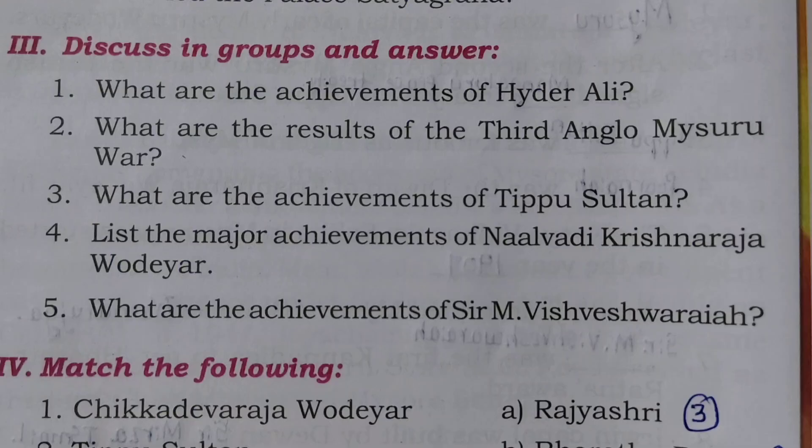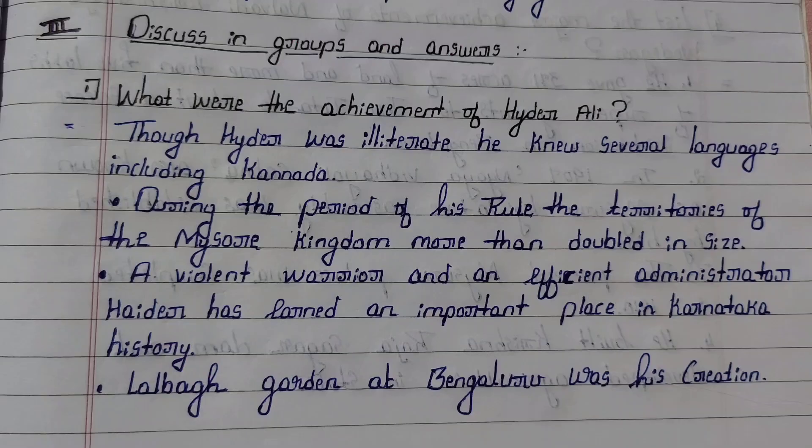Third section: Discuss in groups and answer. First question: What are the achievements of Hyder Ali? Answer: Though Hyder was illiterate, he knew several languages including Kannada. During the period of his rule, the territories of the Mysore kingdom more than doubled in size. A valiant warrior and an efficient administrator, Hyder earned an important place in Karnataka history. Lalbagh Garden at Bangalore was his creation.